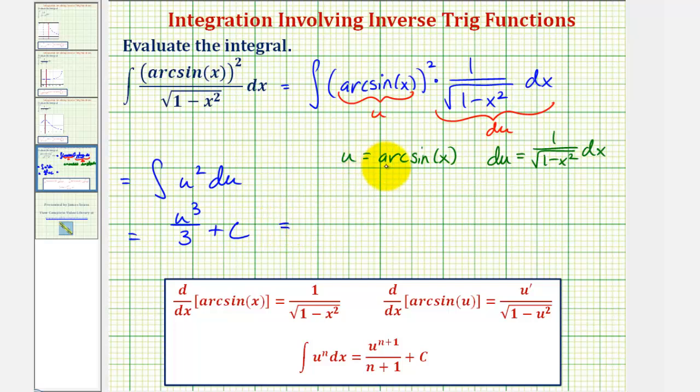So we would have arc sine x cubed divided by three, or one-third arc sine x to the third plus c.